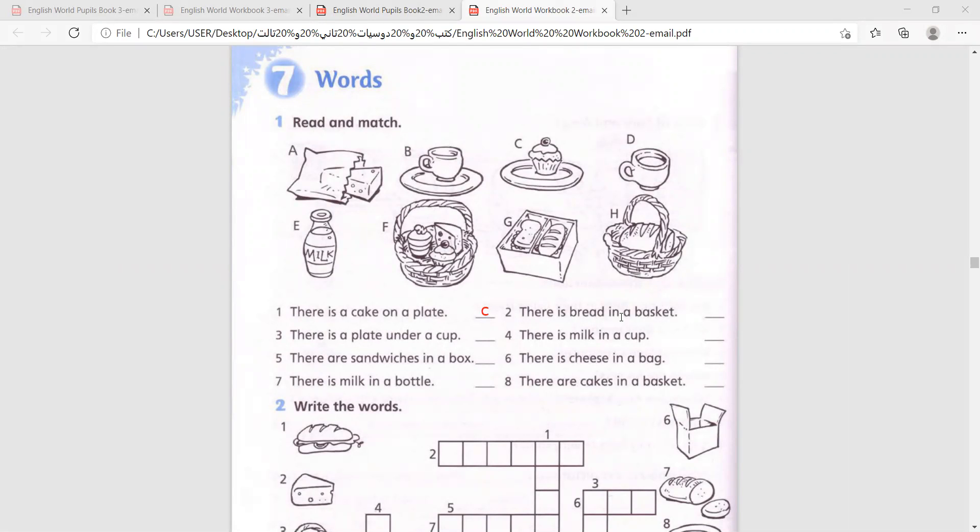Number two, there is bread in a basket, H. So very simple, you just write the letter. Number three, there is a plate under a cup. B, plate under a cup. Number four, there is milk in a cup, D.